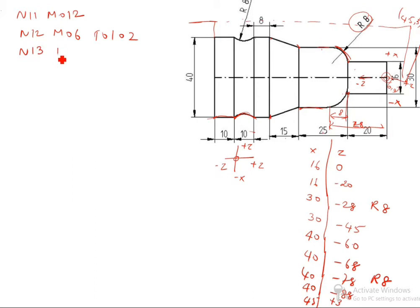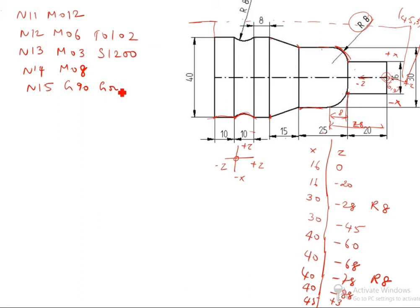N13: M03 — this is spindle on. I will write 1200; we can write 1500, 1000, or 600 also. N14: M08 — this is coolant on. N15: G90, G00, X0, Z0. G90 is absolute program. G00 is linear position — X0, Z0 means we will start from 0,0. That's why we wrote X0 Z0.